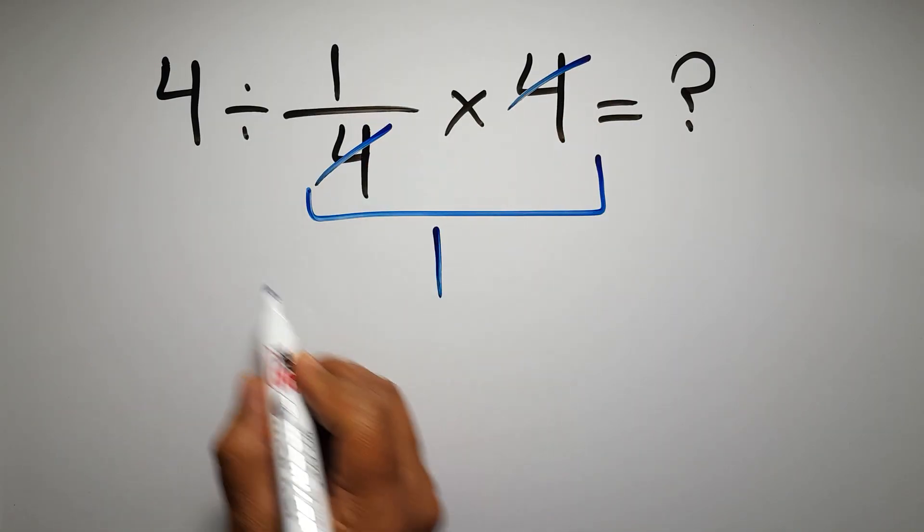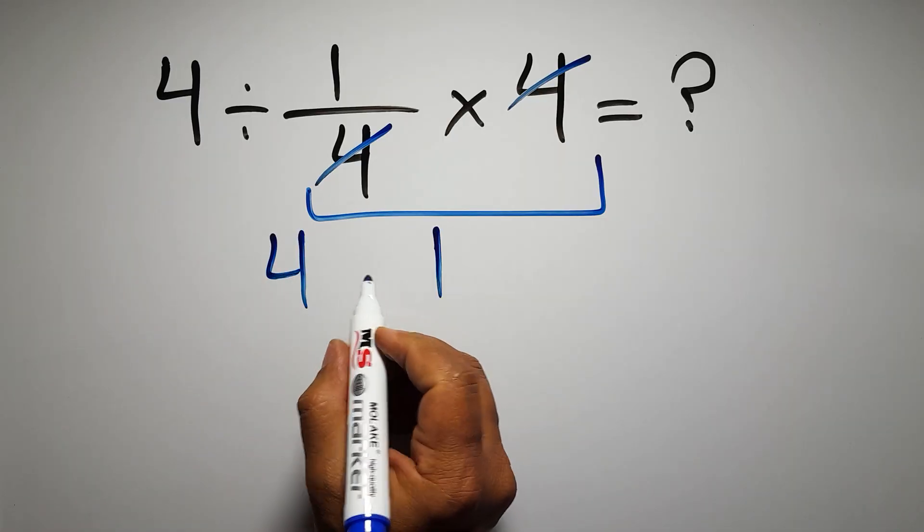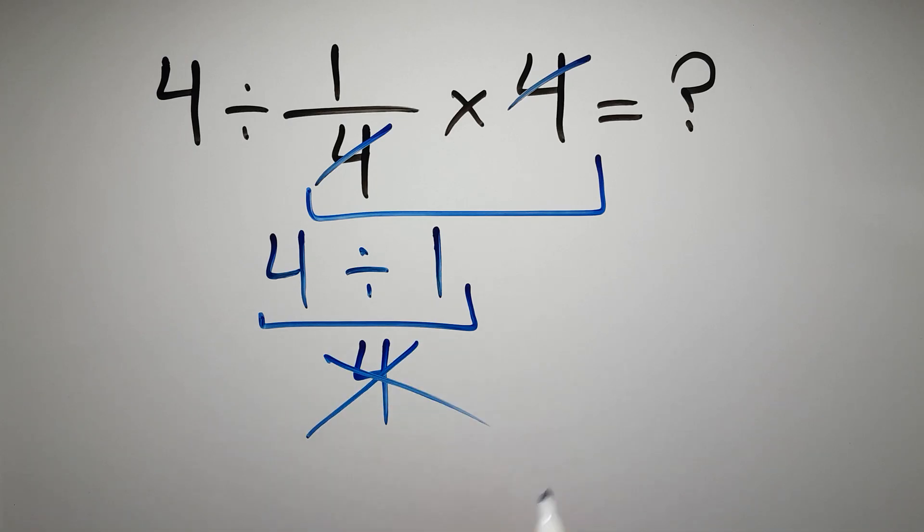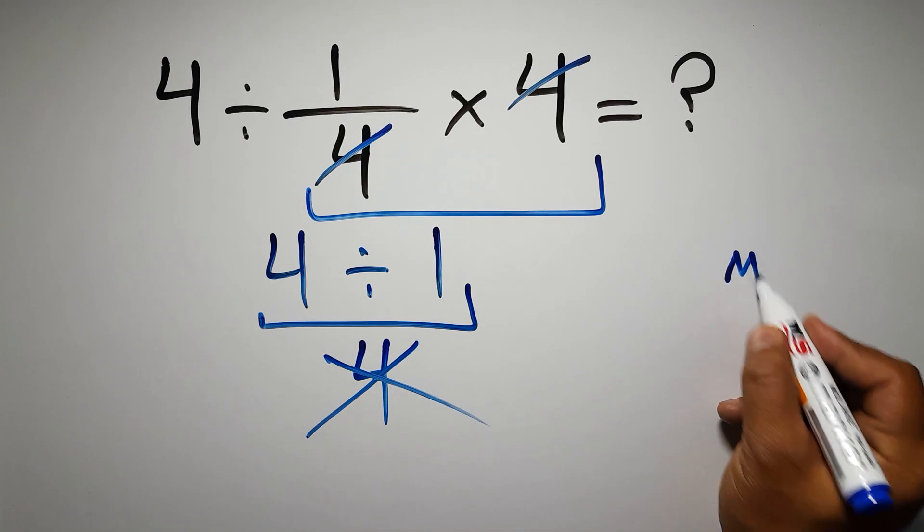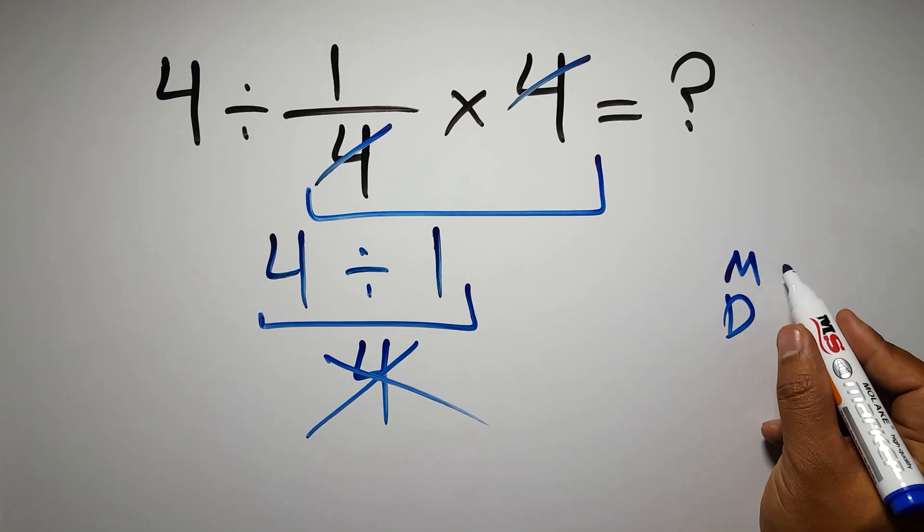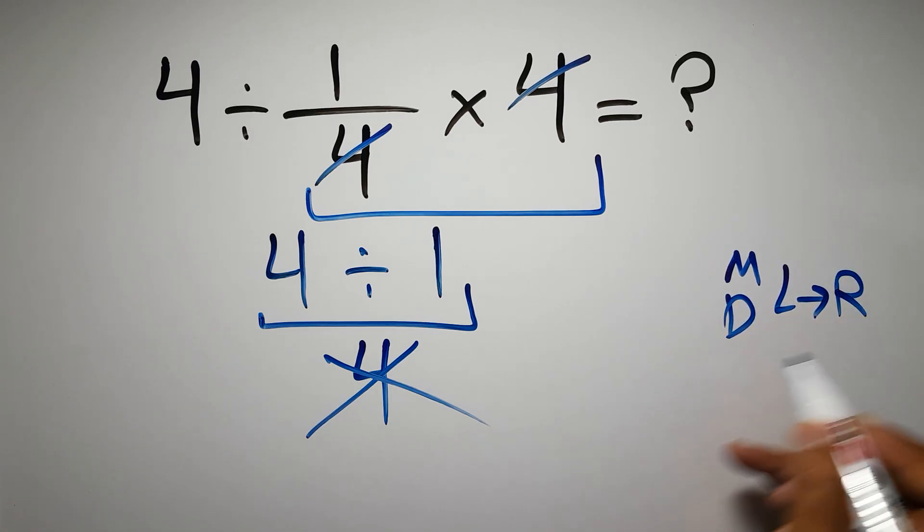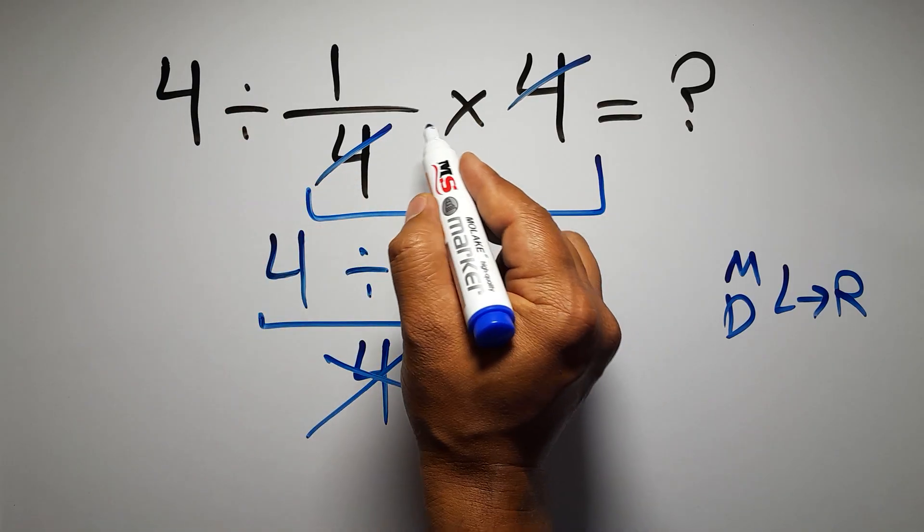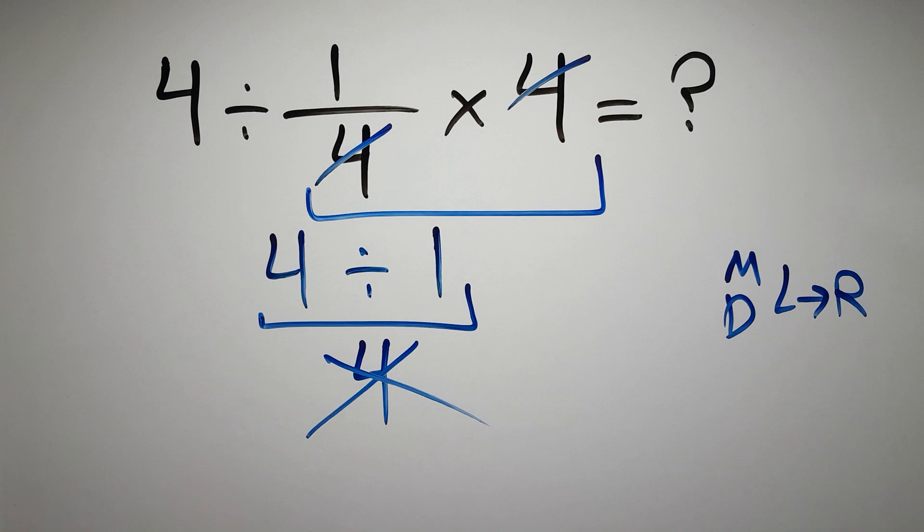So 4 divided by 1 which equals 4. But this answer is not correct because according to the order of operations, multiplication and division have equal priority and we have to work from left to right. So here first we have to do this division, then this multiplication. If we do this multiplication before this division, it is wrong.